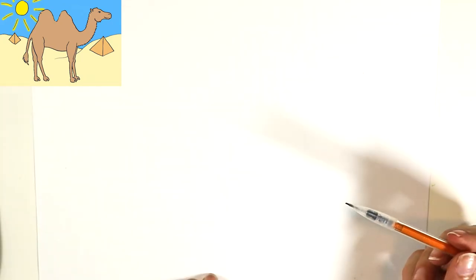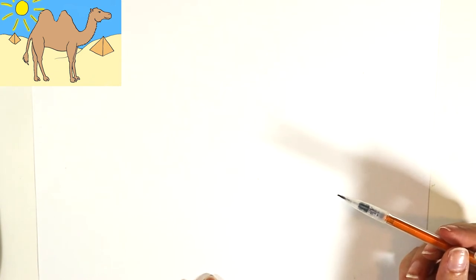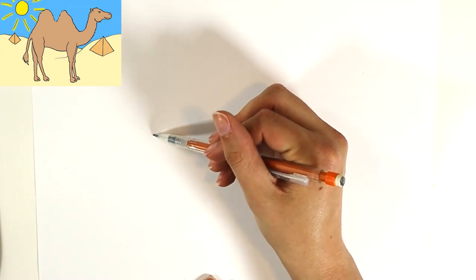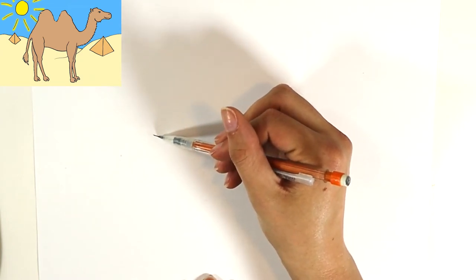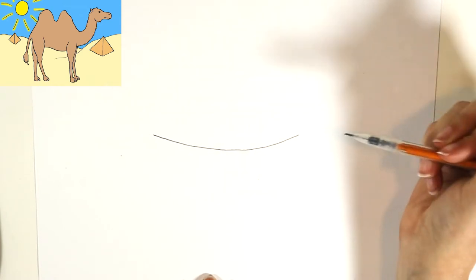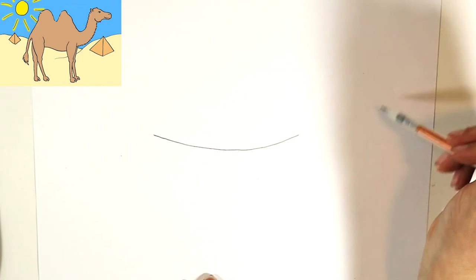Let's start by using our pencil to draw the shape for the camel's body. We're gonna start with the belly, so I'm gonna put it right in the middle and I'm just gonna make a line. It's got a little bit of a curve to it that stops about there.